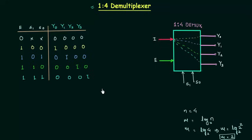And we can find out y0, y1, y2, y3 expressions for them. y0 is equal to you can clearly see e is 1 for all the cases. s1 is 0, s0 is 0 so we will have s1 complement, s0 complement, s0 complement and i. In the same way y1 is equal to e, s1 complement, s0 i.